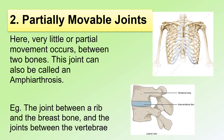Another type of joints are the partially movable joints. Here, very little or partial movement occurs between two bones. This joint can also be called an amphiarthrosis. Examples are the joint between the rib and the breast bone, which can be seen here, and the joints between the vertebrae.